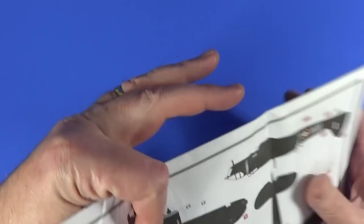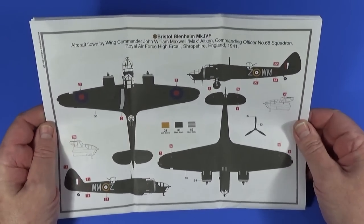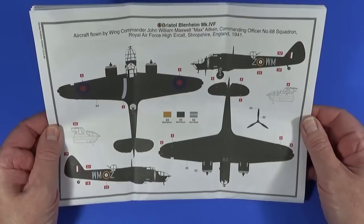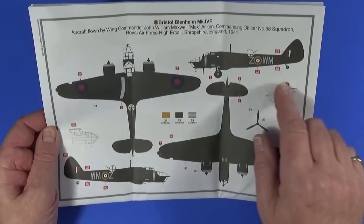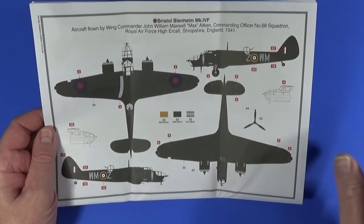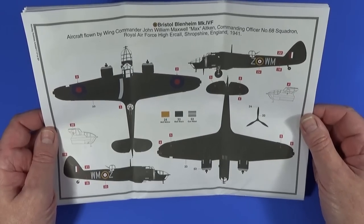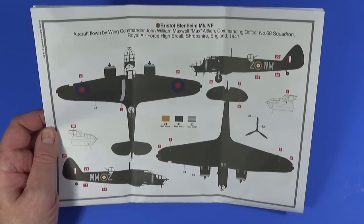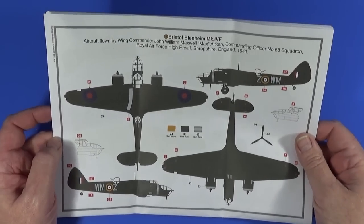And then the other one in the kit is Max Aitken's aircraft from number 68 Squadron in the all over nighttime scheme, black nighttime scheme, which is kind of cute and kind of menacing at the same time. I'm not sure which scheme I'll go for yet, we'll see.